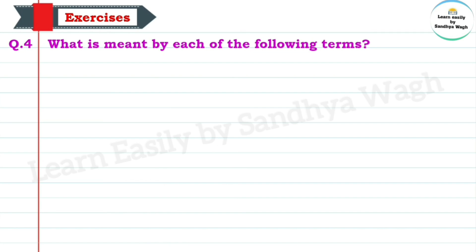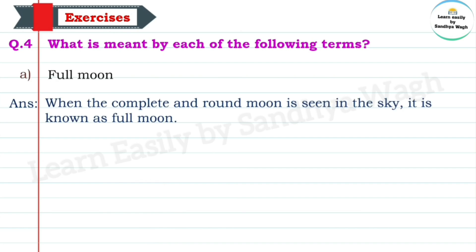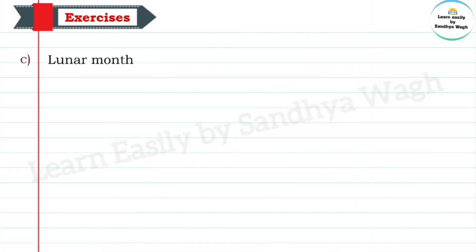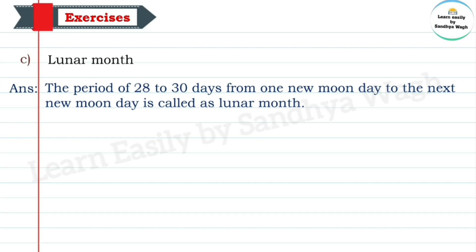Question 4 - What is meant by each of the following terms? Full moon: When the complete and round moon is seen in the sky, it is known as full moon. New moon: When the moon is not visible in the sky, it is known as new moon. Lunar month: The period of 28 to 30 days from one new moon day to the next new moon day is called a lunar month.